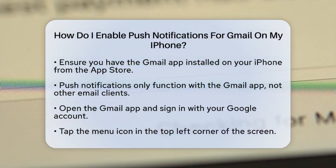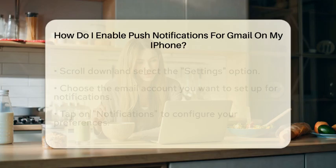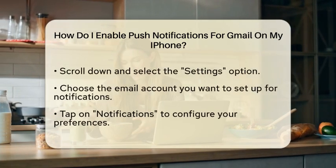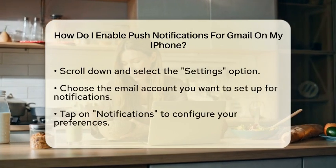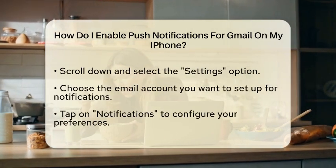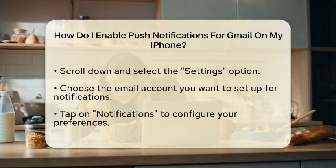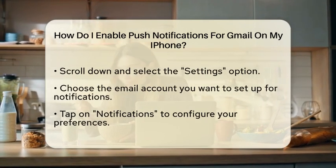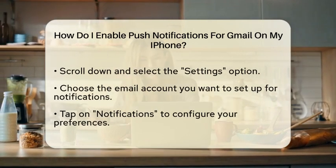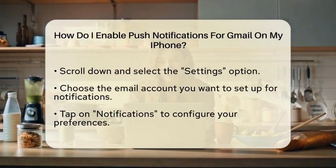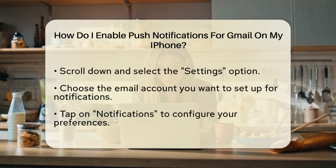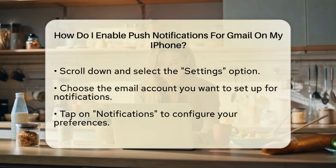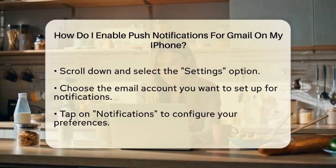Once you have the app, open it and sign in with your Google account. After signing in, look for the menu icon in the top left corner of the screen. Tap on it and then scroll down to find the settings option. Select it and you will see a list of your email accounts. Choose the account you want to configure for notifications.